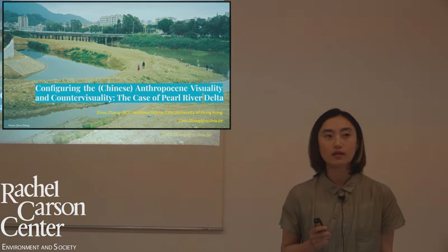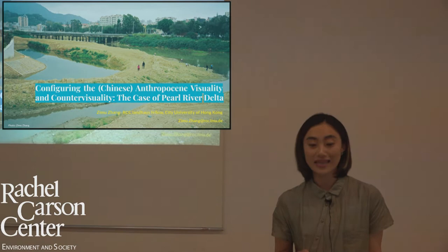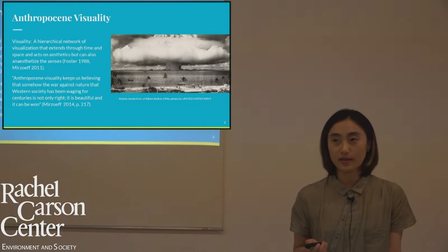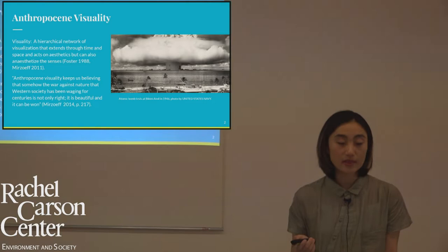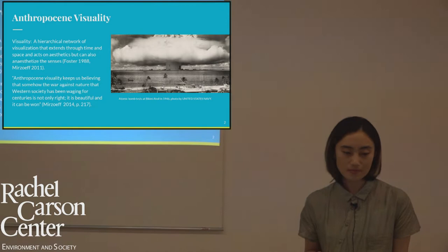Today I would like to talk about an ongoing research I have been doing for the past three months here at RCC, titled 'Configuring the Chinese Anthropocene: Visuality and Counter-Visuality — The Case of the Pearl River Delta.' To start, I want to introduce some key frameworks. First is visuality — one of the central subjects in visual culture. According to Hal Foster and Nicholas Mirzoeff, visuality is different from vision and visibility, which emphasize optical capability.